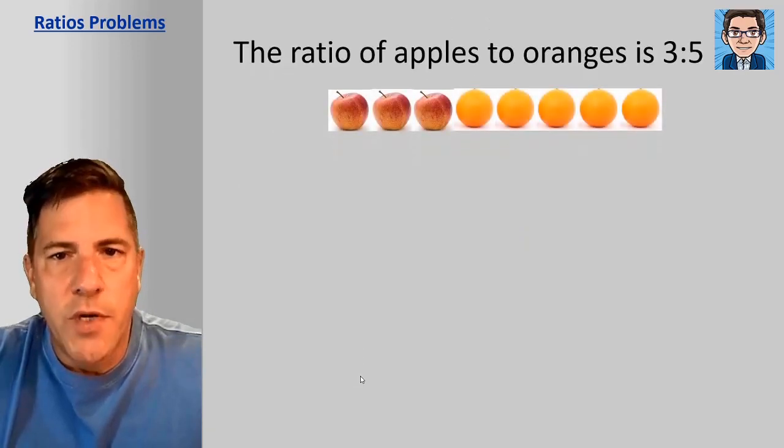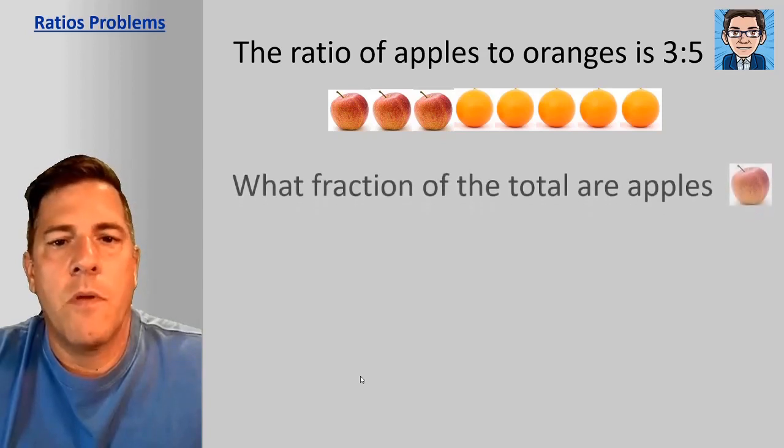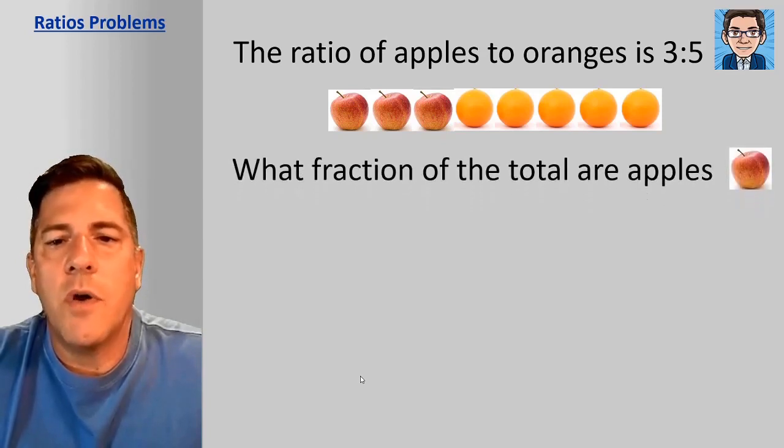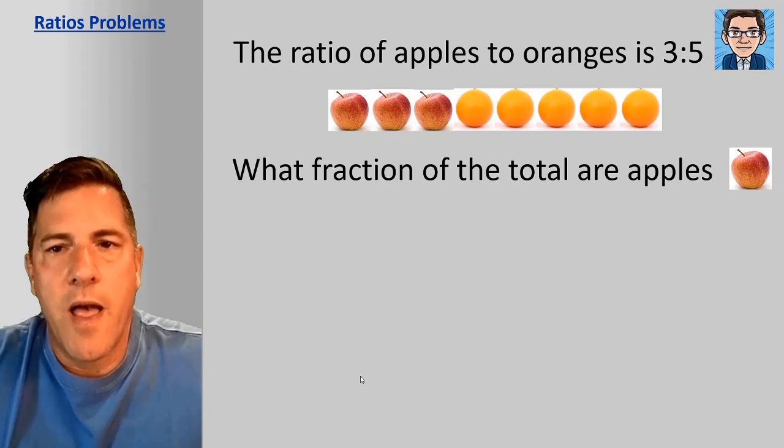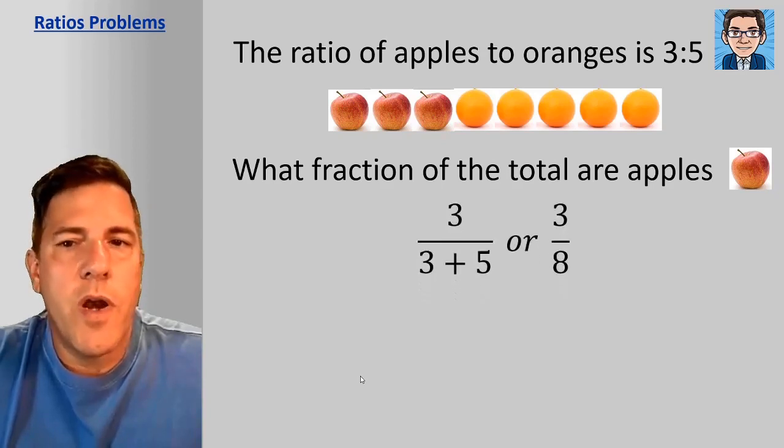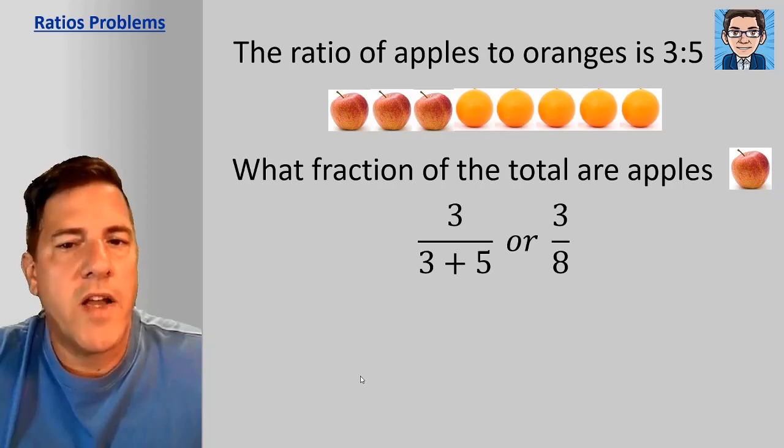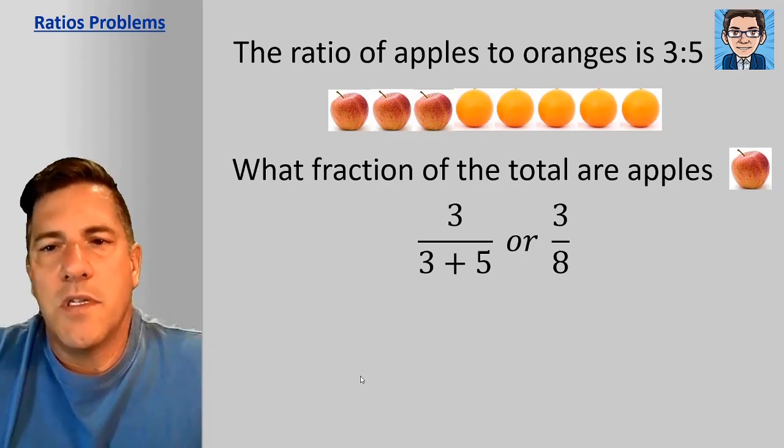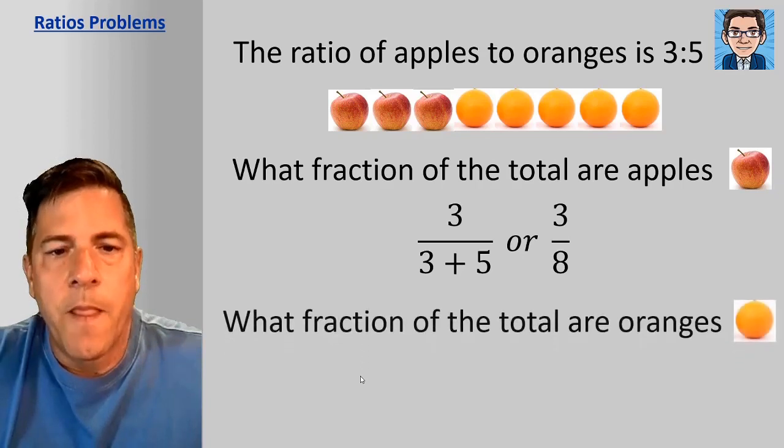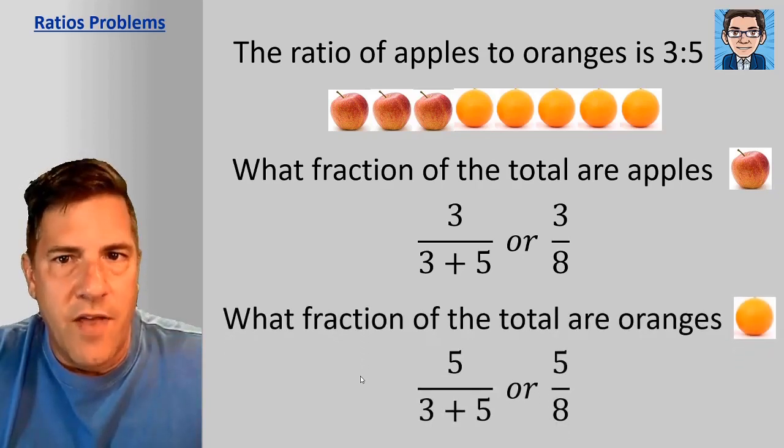So if we had that same ratio, apples to oranges is 3 to 5, what would be the fraction of the total that are apples? So we're going to have 3 as a numerator but the denominator is the 3 plus the 5 because the 3 and the 5 represents the apples and the oranges, so the total is going to be 8. So the fraction of total that are apples is going to be 3 out of 8. And the fraction of total that are oranges are going to be 5 out of 8.